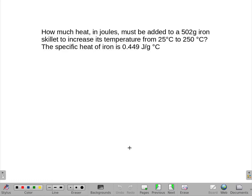How much heat in joules must be added to a 502 gram iron skillet to increase its temperature from 25 to 250 degrees Celsius, if the specific heat of that particular skillet is 0.449 joules per gram per degree Celsius?